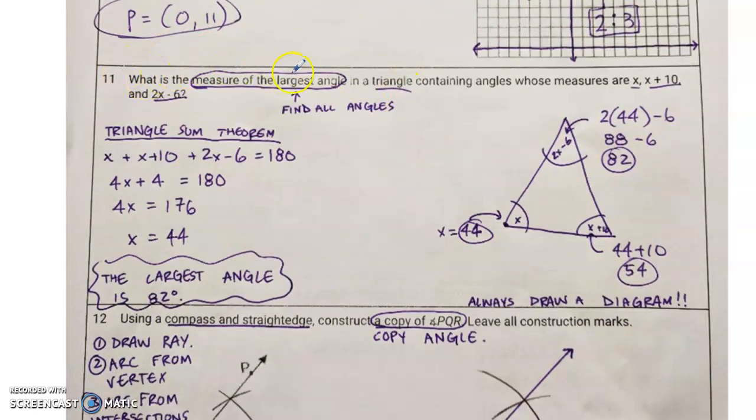Question 11. What is the measure of the largest angle? That means you've got to find all the angles and pick the biggest one. The triangle sum theorem says that this angle, this angle, and this angle add up to 180, but I didn't know that it looked like this until I actually drew a triangle. If it says triangle and it doesn't give it to you, draw it. These are the three angles, 1, 2, and 3, so we add them all together, equal 180. We solve for x.